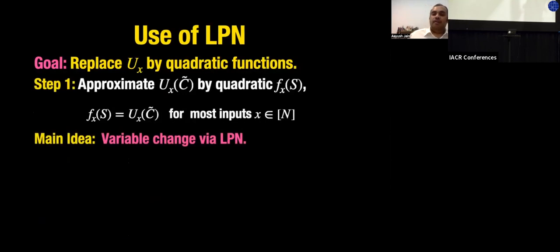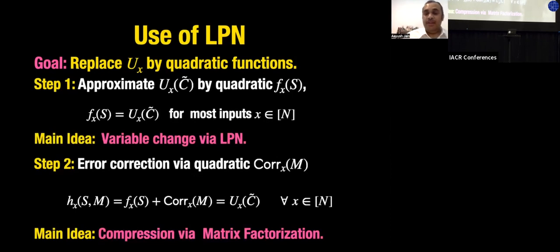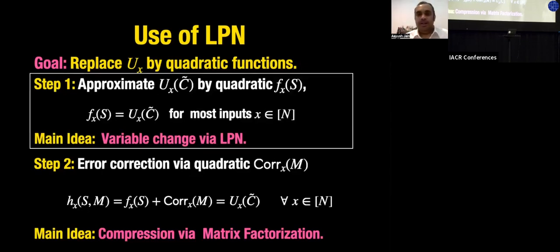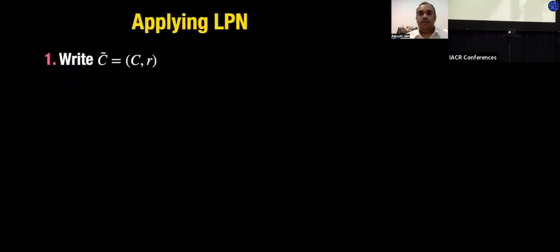We take C̃, pre-process it into another short input s, such that for most inputs x, f_x(s) = U_x(C̃). This almost solves the problem. Then, we come up with another degree-2 polynomial in another short input m such that when added to what we already computed, it gives the correct output on every input. This second step uses a surprisingly simple idea: matrix factorization.